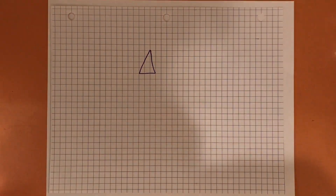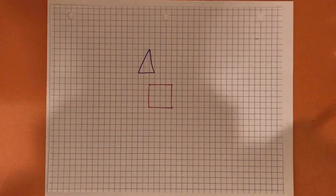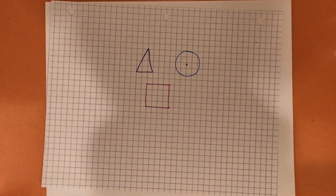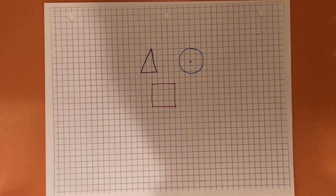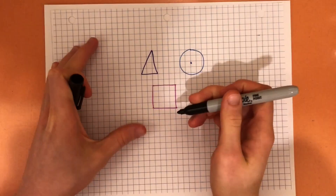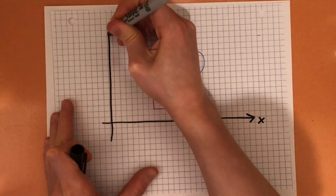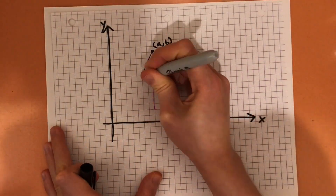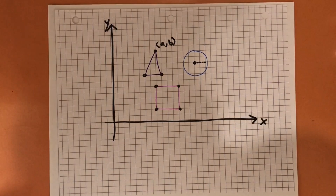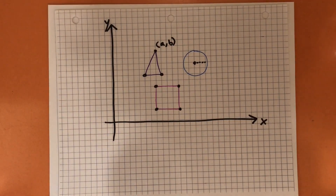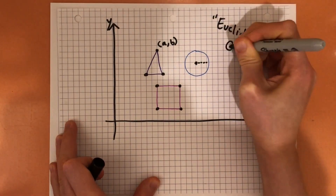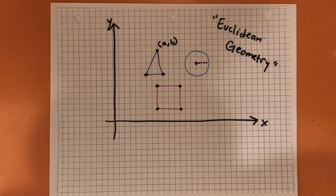Think about the shapes that you're familiar with: triangles, squares, circles. These exist in the flat plane that you've probably learned all about throughout elementary, middle, and even high school. You've got a standard set of x and y axes, and each shape can be described by a set of x and y coordinates. This standard type of geometry is called Euclidean geometry, and it's home to most of the concepts you're probably familiar with.